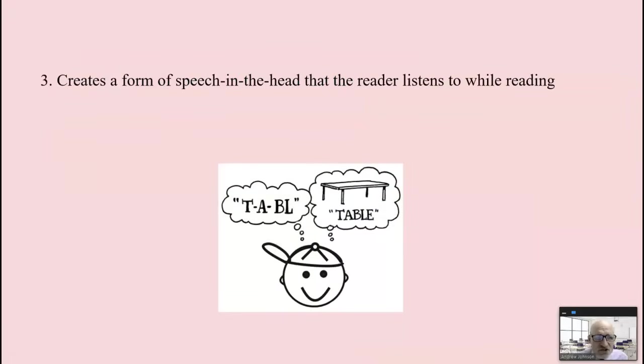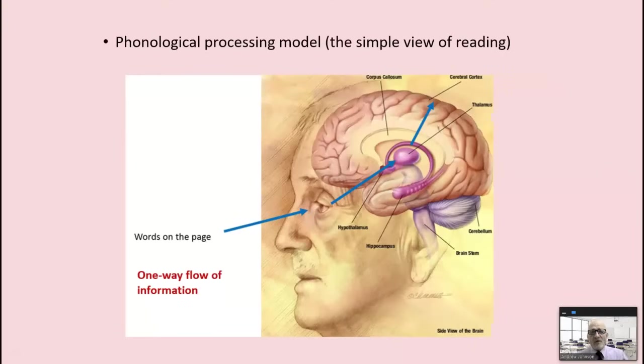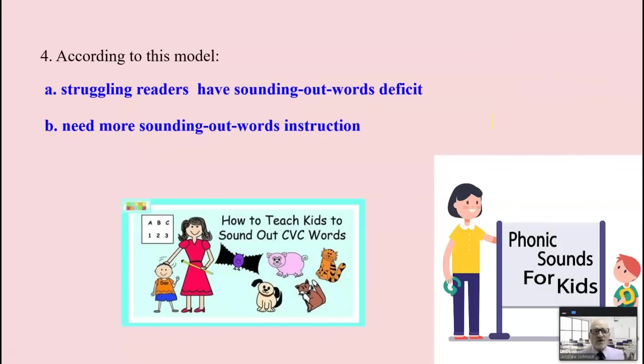According to this model, reading creates a form of speech in the head with which the reader listens to while reading. This simple view of reading is what James Hoffman calls it, the one-way flow of information. Words on the page hit the eyeballs, go to the thalamus, the relay station in the brain, and then up to the cortex. That's what reading is according to the phonological processing model.